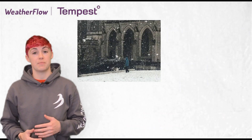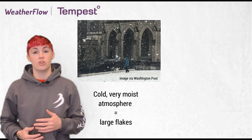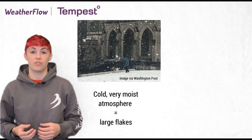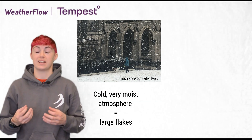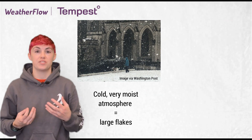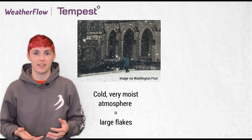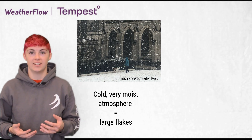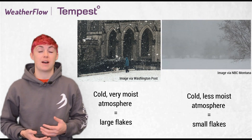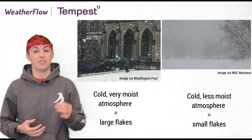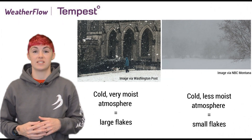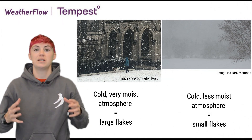In a cold and very moist atmosphere, we get really large snowflakes — those are the big ones that land on your eyelashes and you have to blink them away. In a colder and less moist atmosphere, however, that's when we get the very tiny snowflakes that look like a million pieces falling from the sky.